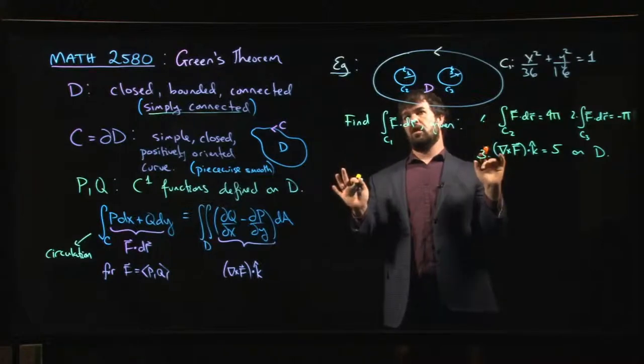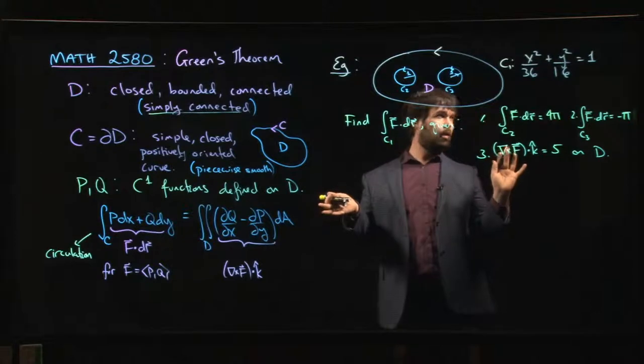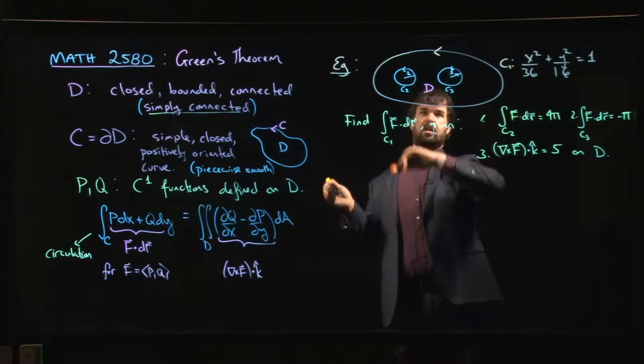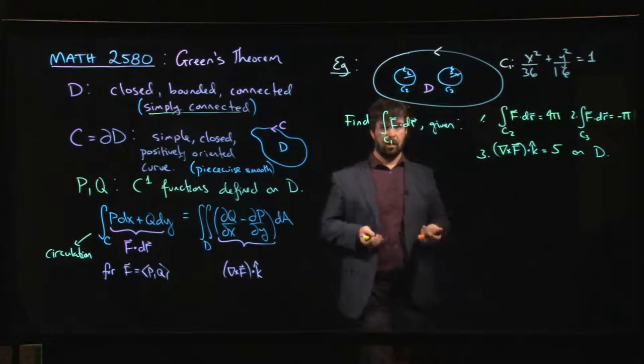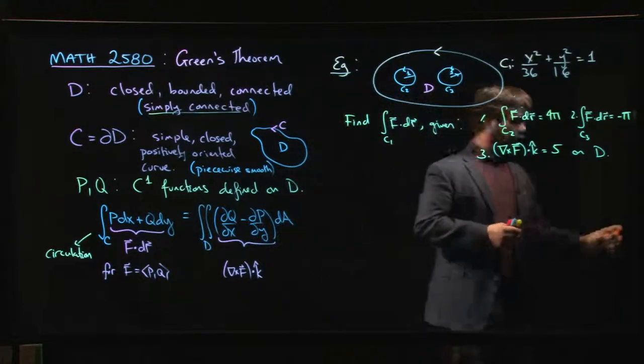D is the region which is inside that ellipse but outside these two circles. They're circles of radius 1. I didn't even bother telling you what the centers are because it turns out that's not important, but I'm pretty sure that ellipse is big enough that I can fit two circles of radius 1 inside.